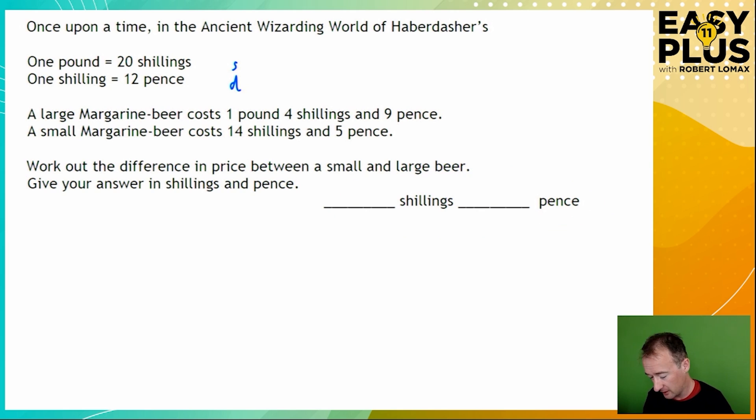And the answer box makes clear that we need a price in shillings and pence. There's no space here for pounds. So it makes sense to convert the price of a large beer which is given in pounds and shillings and pence just into shillings and pence. 1 pound is 20 shillings. So taken together this is 24 shillings and 9 pence. We just need to subtract. So 24 shillings minus 14 shillings gives us of course 10 shillings and 9 pence minus 5 pence gives us 4 pence. So we're left with 10 shillings and 4 pence. There are 12 pence in a shilling and 4 is not greater than 12 so we don't need to do any carrying between those columns.